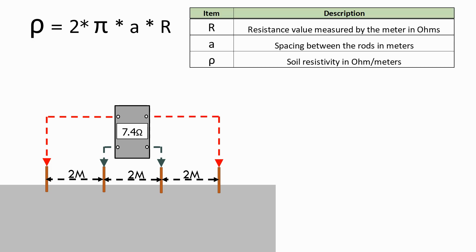Using our formula from before, the soil resistivity, ρ, equals 2 times π times A times R.